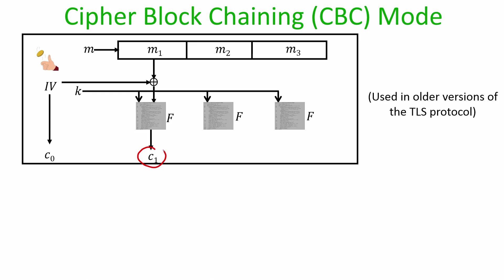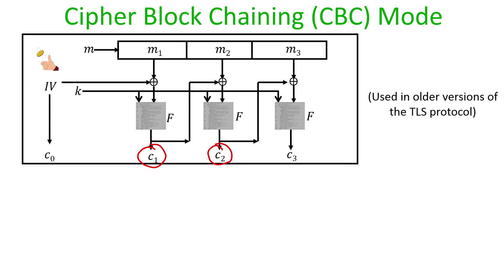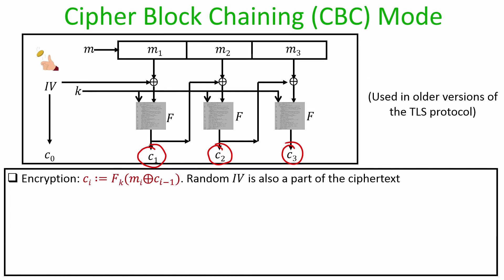The first invocation of f takes the XOR of message block M1 with the IV as block input, producing C1. This mode is called ciphertext block chaining because C1 is then XORed with the second message block M2 as input to the second invocation of f, producing C2. C2 is then XORed with M3 as input to the third invocation, producing C3. The overall ciphertext is C0 concatenated with C1, C2, and C3.